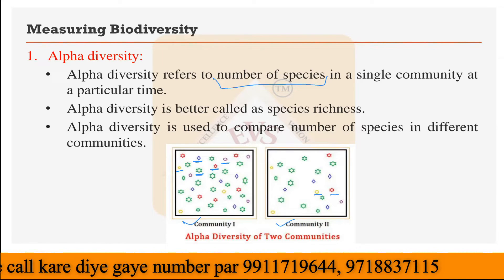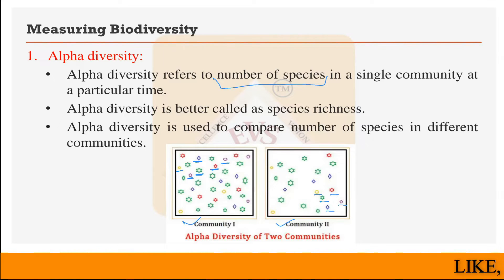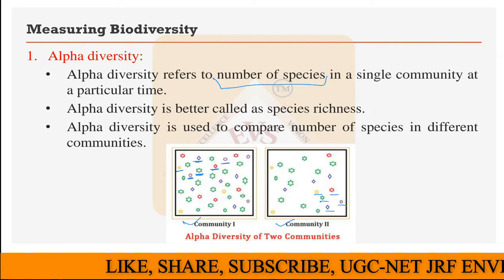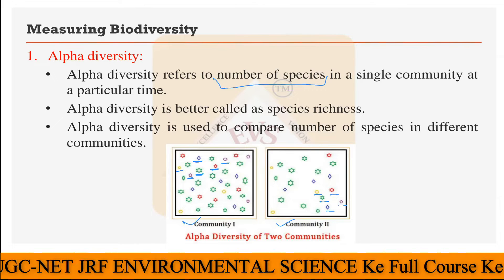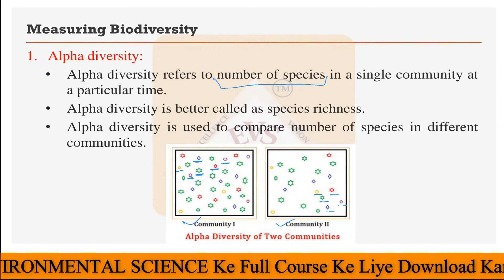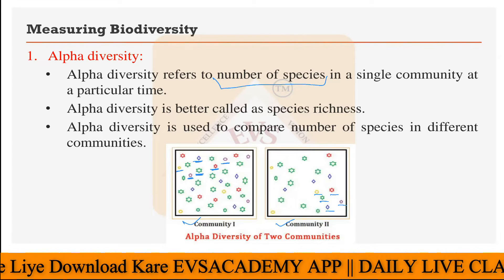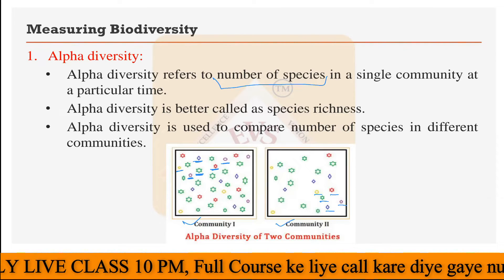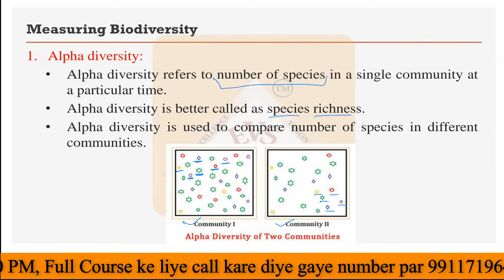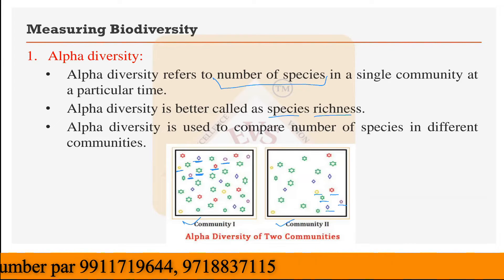You can see a yellow one, red one, and a purple one as well — here also another purple one. So here you can see five types, and here you can see six types. Among these six types there is also a high number of organisms. In community two, the number of species is less, as well as the number of organisms is also less. So in this scenario, we can say that community one has high alpha diversity while community two is low in alpha diversity. Alpha diversity is better called as species richness — more species in one particular area means more alpha diversity.